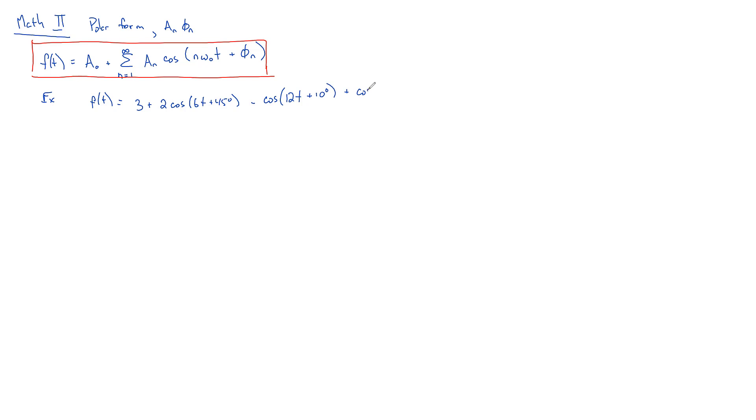So it might look like this, plus another one, which would be now it's three times this, or 18 T plus six degrees plus different amounts.